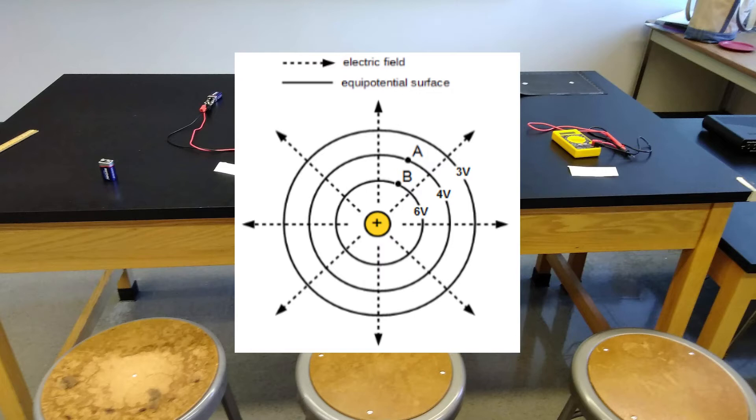The potential increases as you get closer to the charged particle, but it doesn't change if you move along concentric circles around the particle. These lines of constant potential are always perpendicular to the electric field lines.